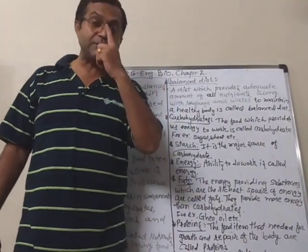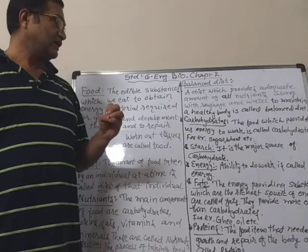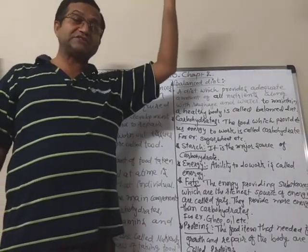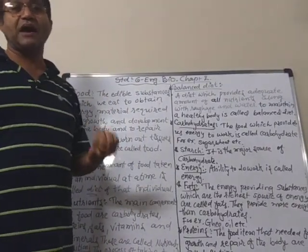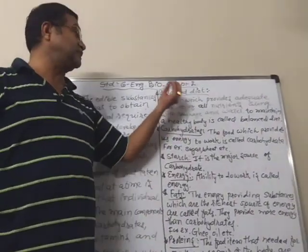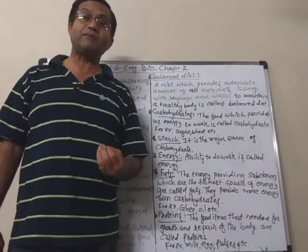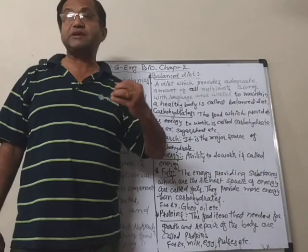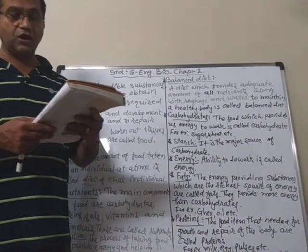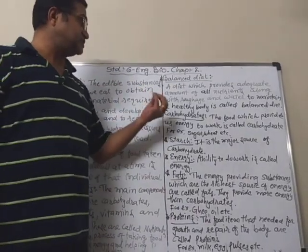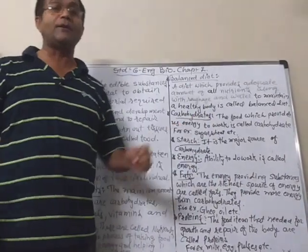We must eat a balanced diet. Because if we don't eat a balanced diet, some diseases can also be caused. If some of these nutrients are less in our body, we can get different types of diseases. So we must know which types of food items give us which types of nutrients.